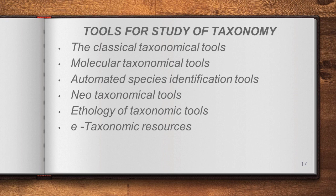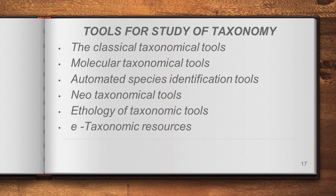Now let us move to the next topic: tools for the study of taxonomy. These are things that help in taxonomical study. The tools are: classical taxonomical tools, molecular taxonomical tools, automated species identification tools, neotaxonomical tools, ethology of taxonomical tools, and e-taxonomical resources.